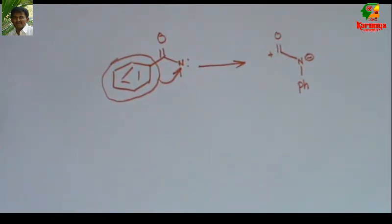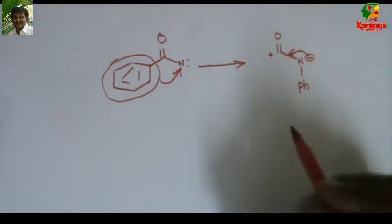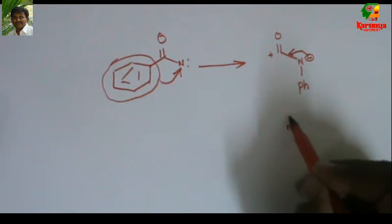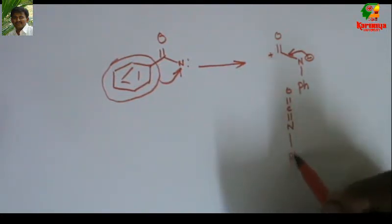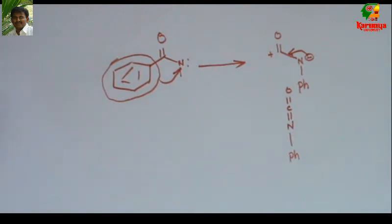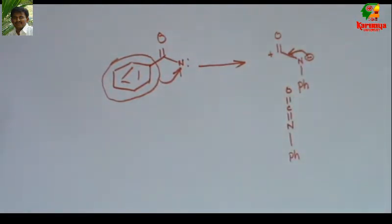When they are attacked by a nucleophile, they generate a minus charge on the nitrogen or carbon. Now this minus charge flows here to give another intermediate, isocyanate (Ph-N=C=O). This functionality is called isocyanate.